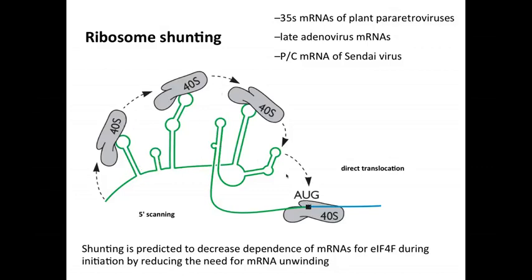And this is one depiction of how that might work. This must be a very highly structured RNA that the ribosome can just pass over to reach the AUG. And this ribosome shunting has been found in the mRNAs of a number of different viruses, as you can see here, and hasn't yet been discovered, to my knowledge, in cellular mRNAs. It could be wrong there, but I'm sure it will be.